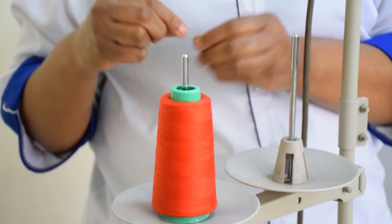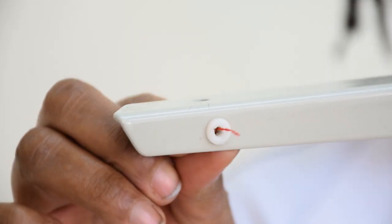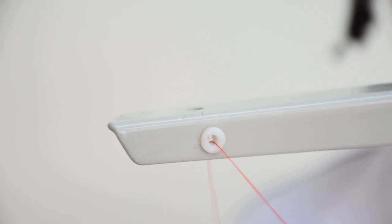Place your thread on the thread stand. Then thread it through the thread guide on the thread stand.